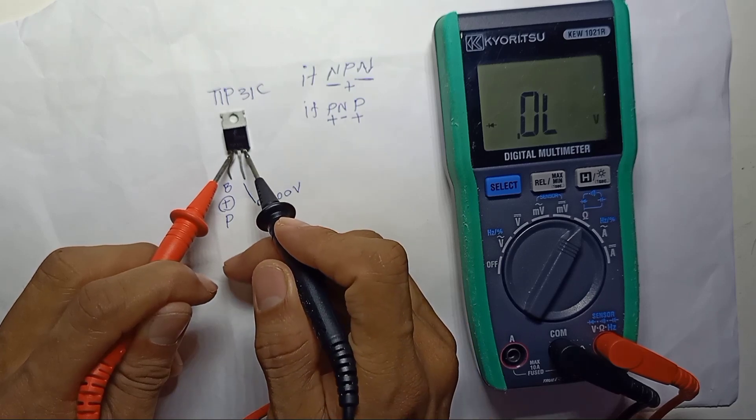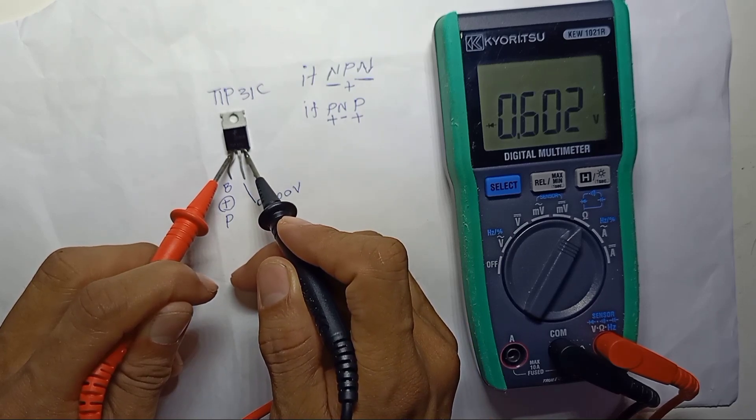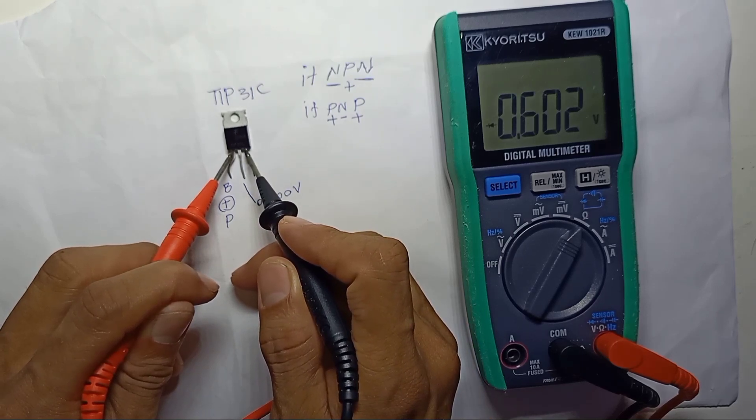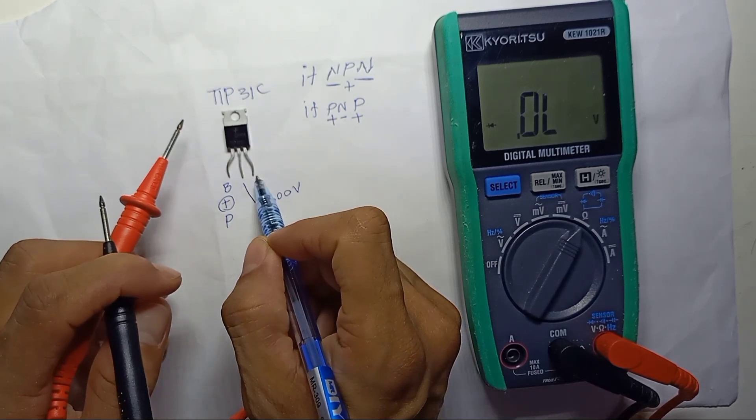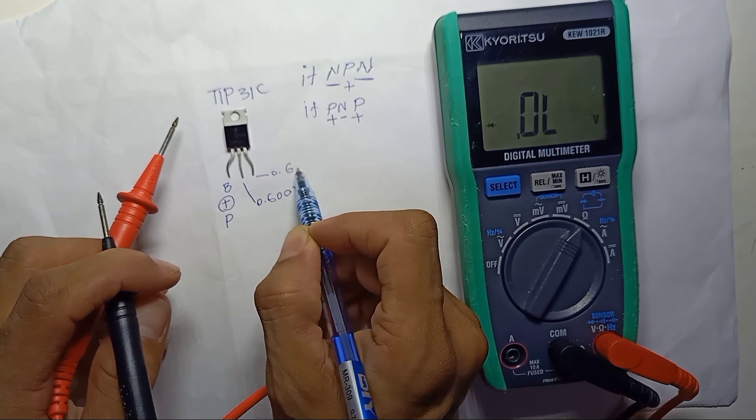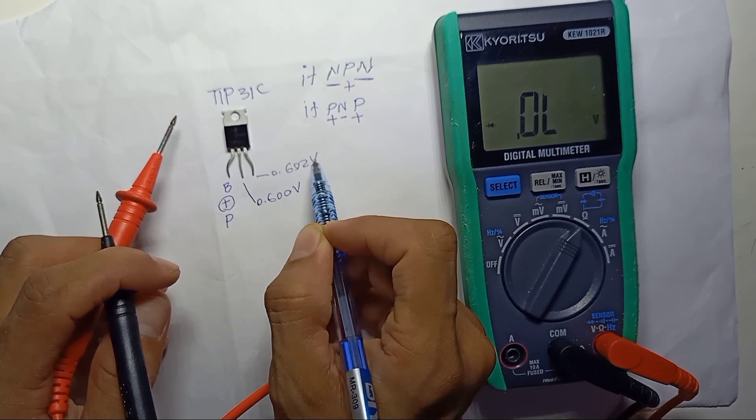Base to the top pin, diode voltage drop, 0.602. 0.602 voltage drop.